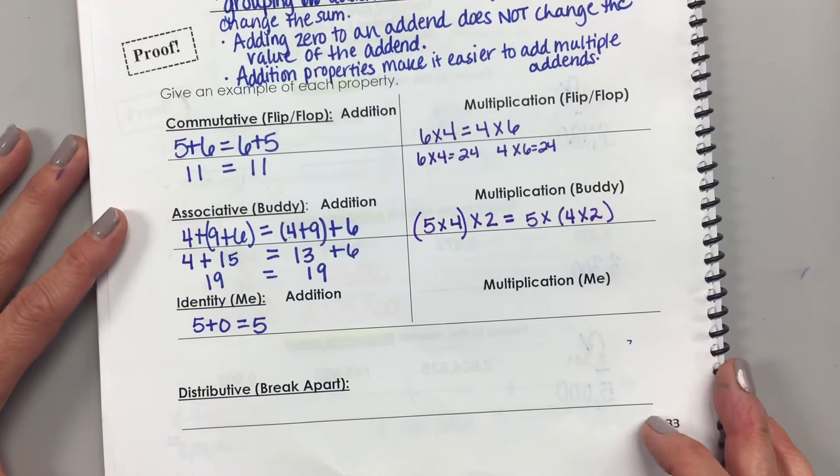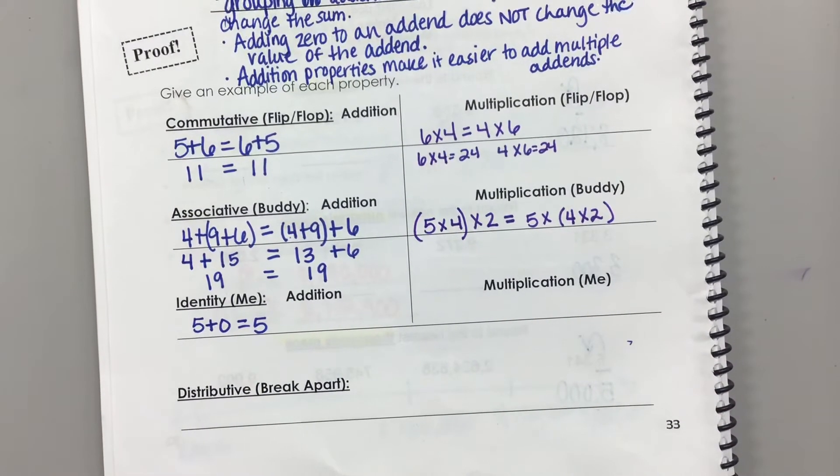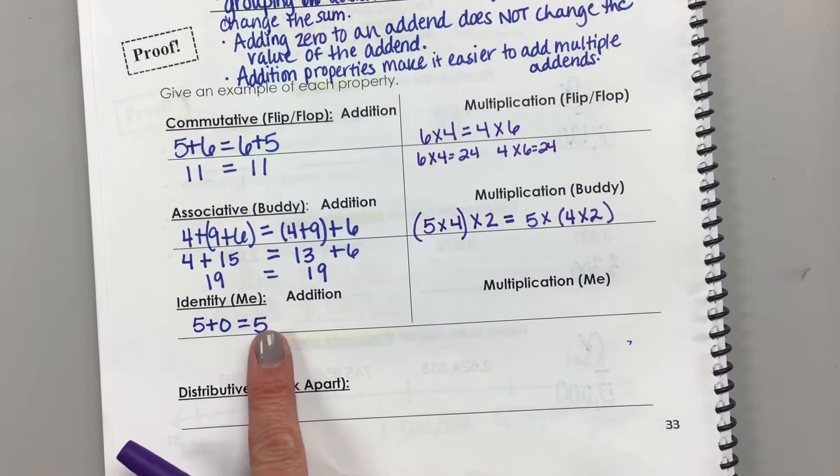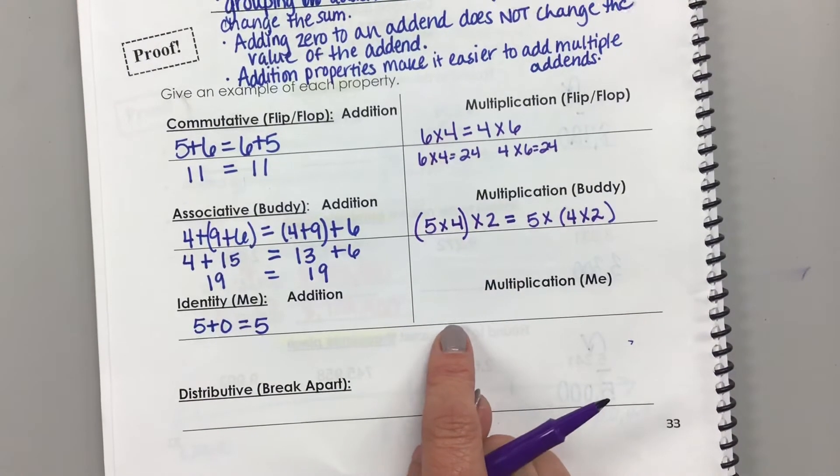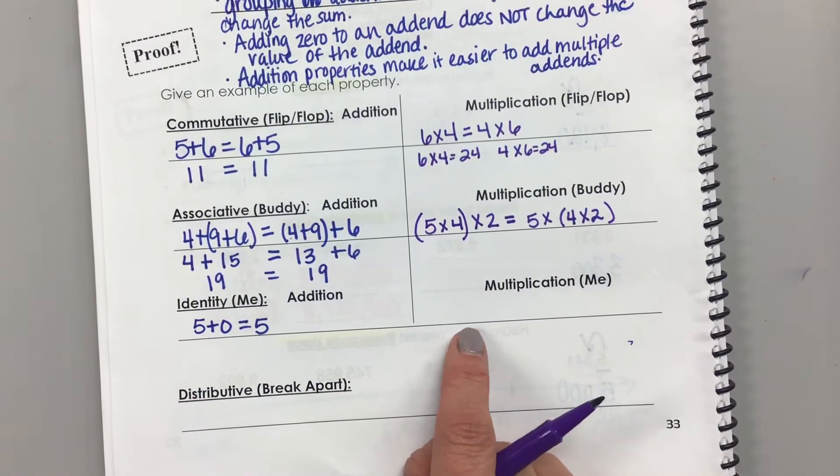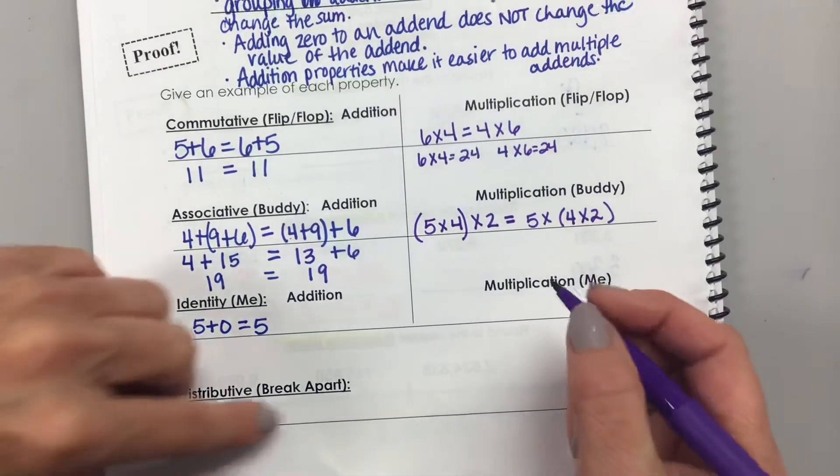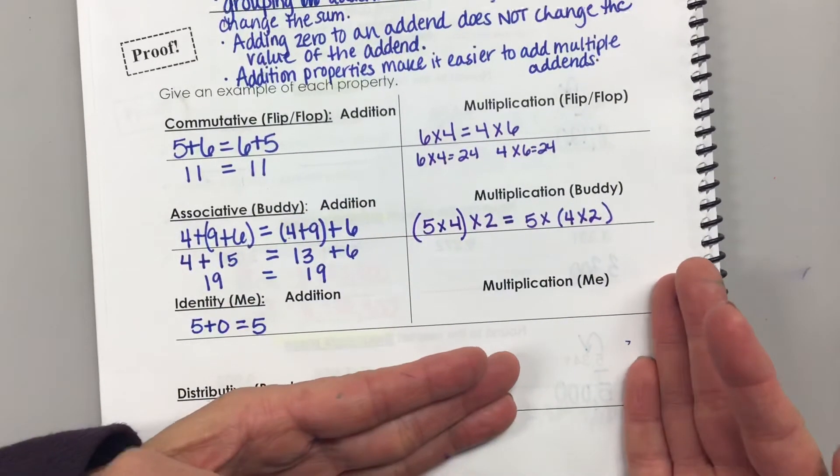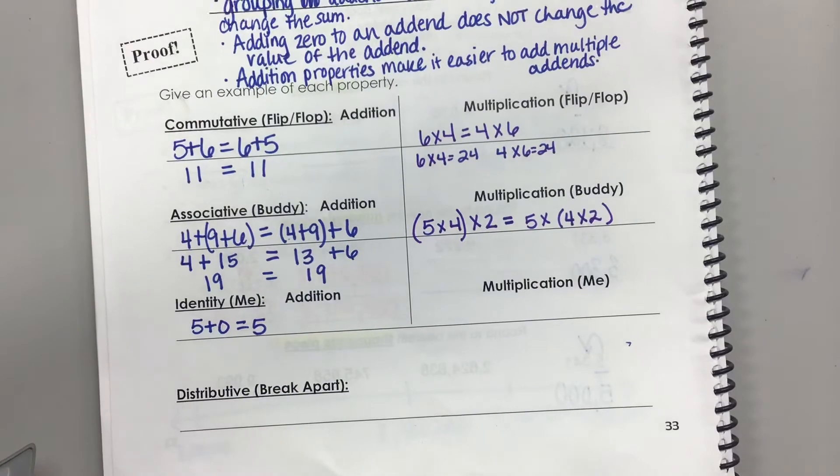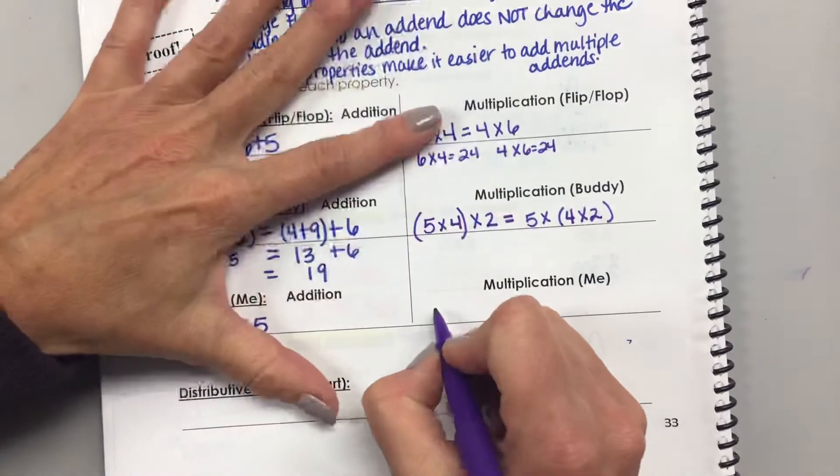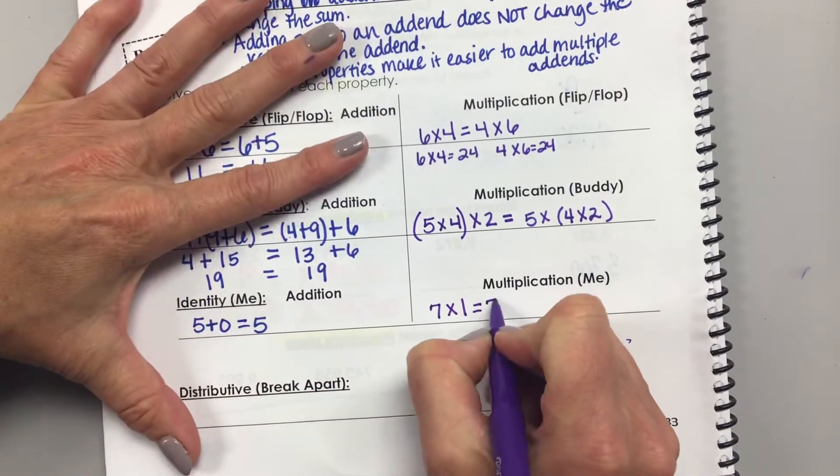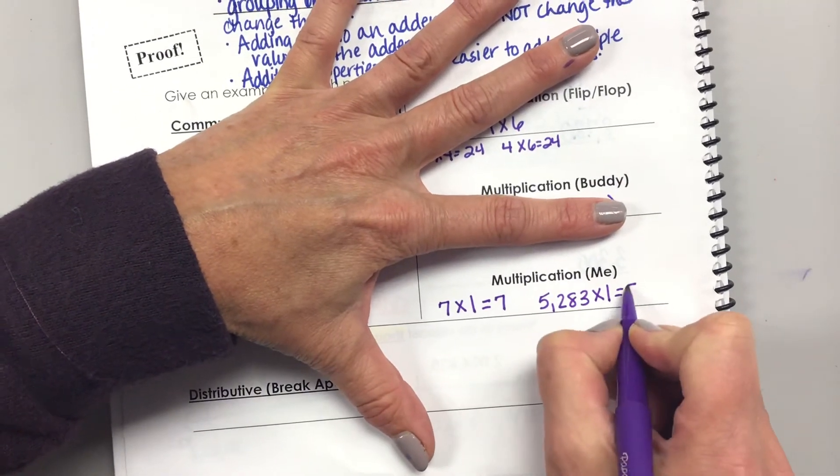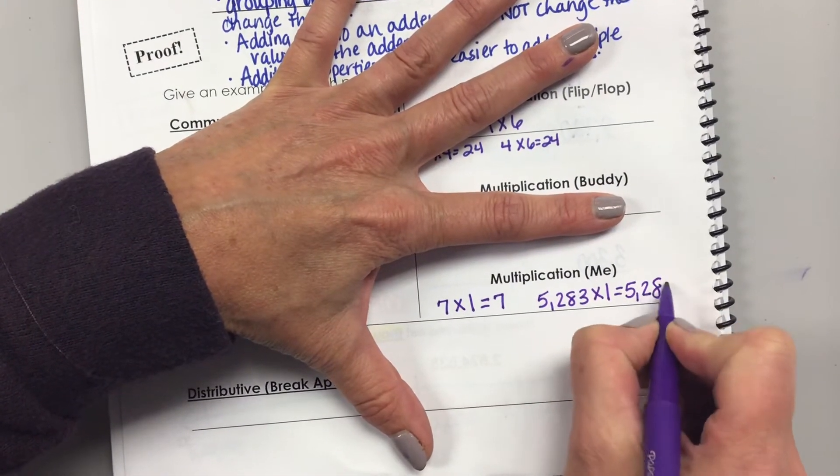Now this one is the one that's a little bit different. The identity property says that if we add zero to any addend, that does not change the addend. Is that true for multiplication? If I multiply by zero, what is it? What do I have? One. So the identity property says that multiplying by one doesn't change the value of your first factor. Factor. So it's seven times one is seven. 5,283 times one is 5,283.